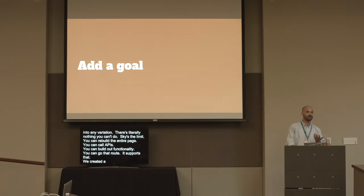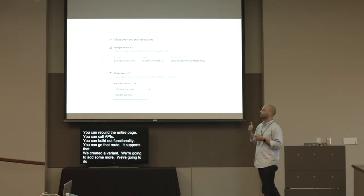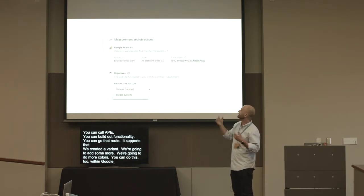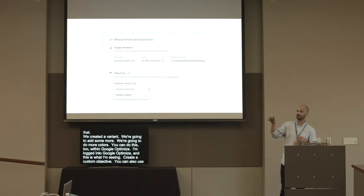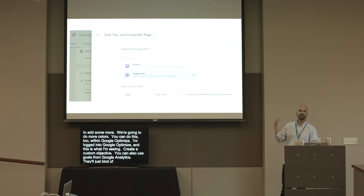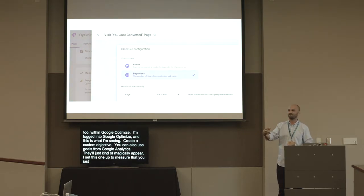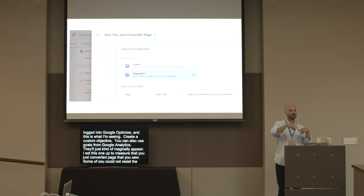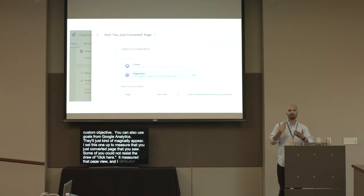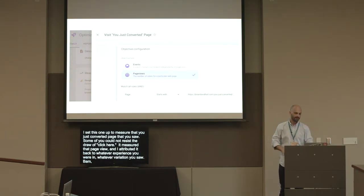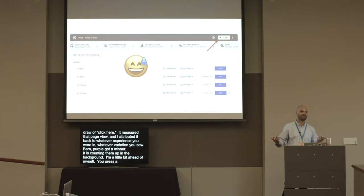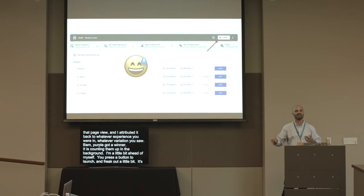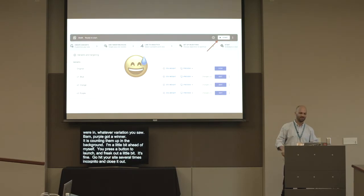We created variants in different colors, and then we have to figure out what we're measuring. You can do this within Google Optimize — you can create a custom objective, or use goals from Google Analytics which will just magically appear. I set this one up to measure the 'you just converted' page — those who clicked 'click here' triggered that page view, and it attributed it back to whichever experience they were in. Then you press a button to launch, go hit your site several times in incognito, close it out, see the variations, make sure nothing's broken — and then you're just tracking.